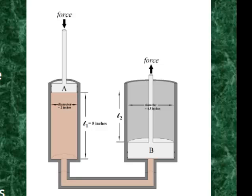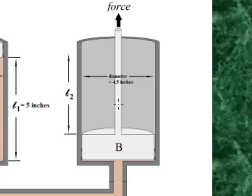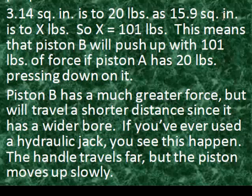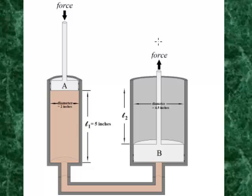That force of 20 pounds on piston A is spread out over the surface area of piston A, which is 3.14 square inches. Recall from the area formula for a circle: area equals pi r squared. Piston B has a diameter of 4.5 inches, making the force acting on piston B a direct proportion. 3.14 square inches is to 20 pounds as 15.9 square inches is to x number of pounds. Solving this, x equals approximately 101. This means piston B will push up with 101 pounds of force when piston A has 20 pounds pressing down on it — but piston B will travel a shorter distance since it has a wider bore.